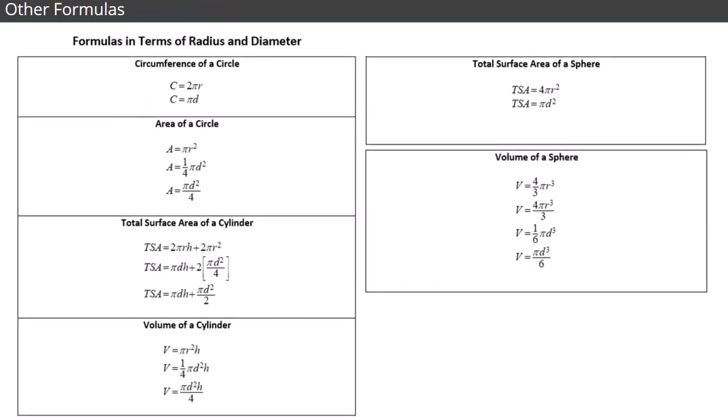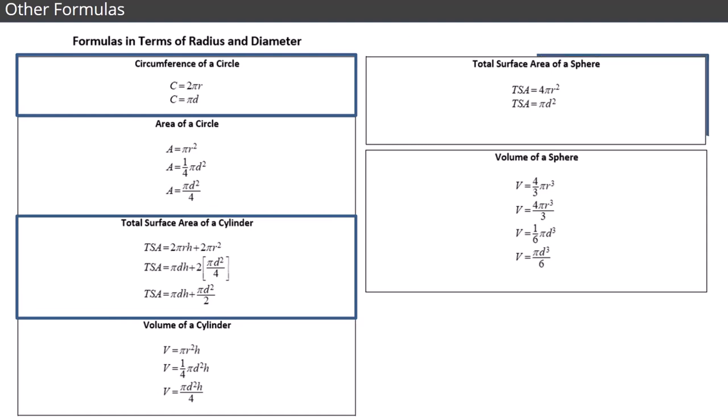Finally, let's wrap up by looking at a few other formulas where diameter is often used. These include finding the circumference of a circle, total surface area of a cylinder, total surface area of a sphere, and volume of a sphere. We won't go into these formulas in detail, but it's good to be aware of these for future projects.